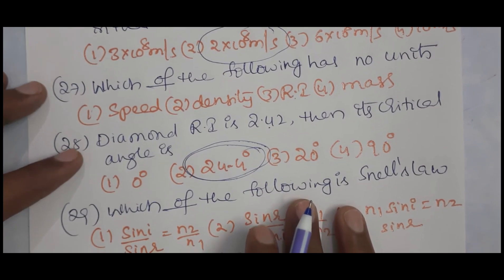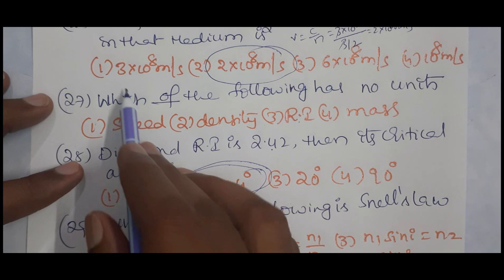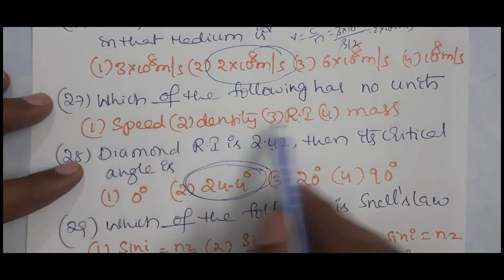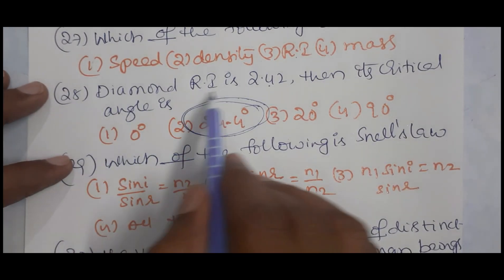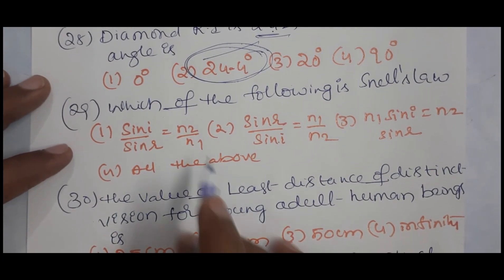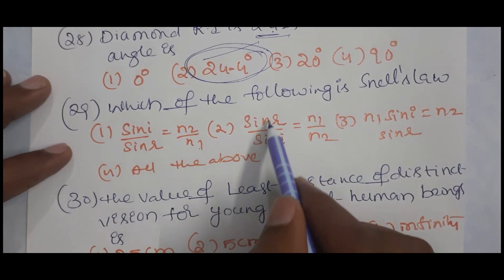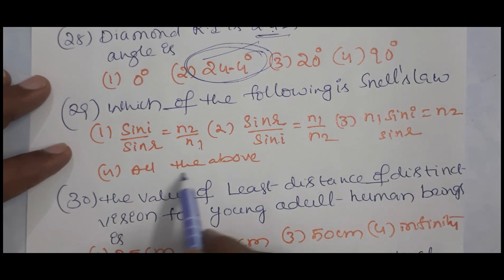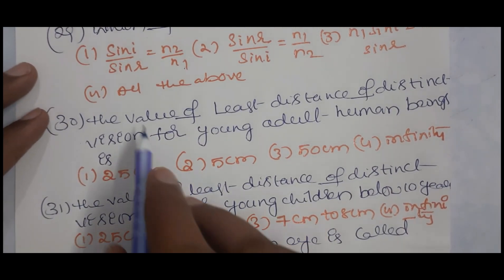Diamond has a refractive index of 2.42, so its critical angle is 24.4 degrees. Snell's law can be expressed as: sin i / sin r = n2/n1, or sin r / sin i = n1/n2, or n1 sin i = n2 sin r — all of the above are correct forms.